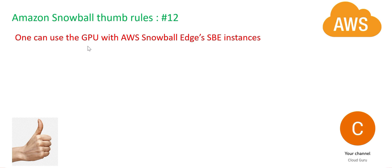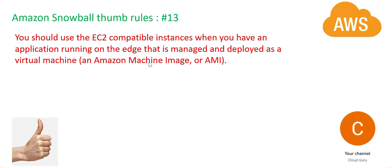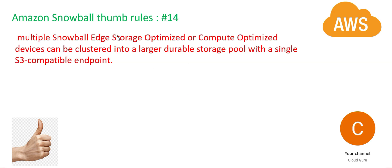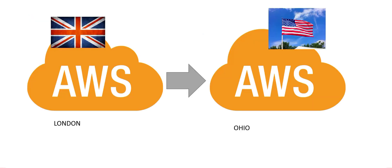SBE instances are good for video processing — remember, it is video processing for which we need GPU services, not data analytics or batch processing. Always remember: if you are doing compute on Snowball, you should have a compatible EC2 instance supporting it. You can have storage optimized and compute optimized clusters. Finally, they will all have a single S3-compatible endpoint using which you can move the data to AWS S3 buckets.